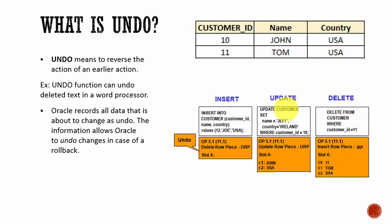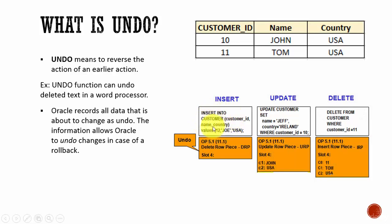Why is undo data used? In case you have to roll back, that undo data will be used to roll back. Here we have two rows. Whenever we perform an insert into this table, the Oracle database maintains undo data. What is undo data for an insert? It is delete. If we perform this insert operation, a third row will be inserted. If I have to undo it — if I delete that third row — I am left with the two rows.